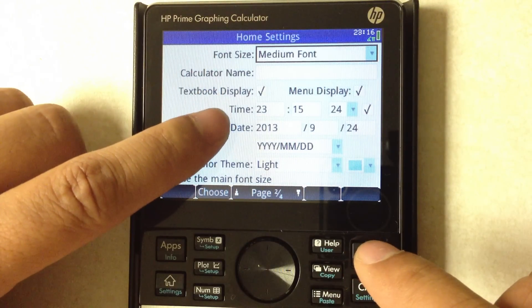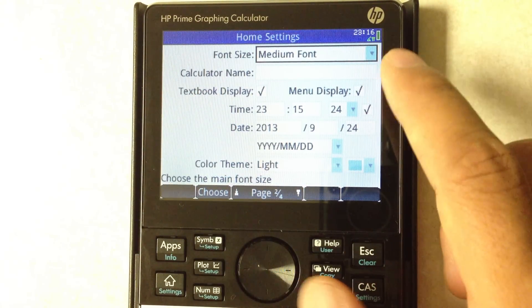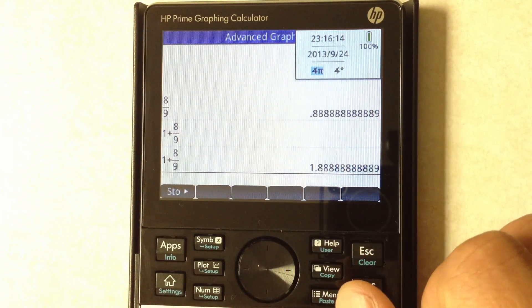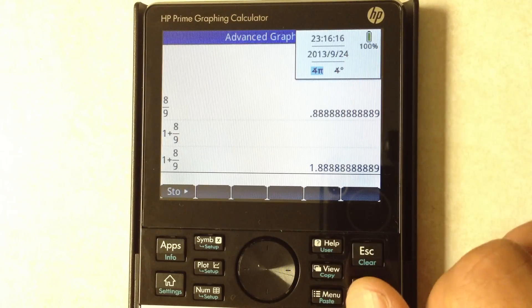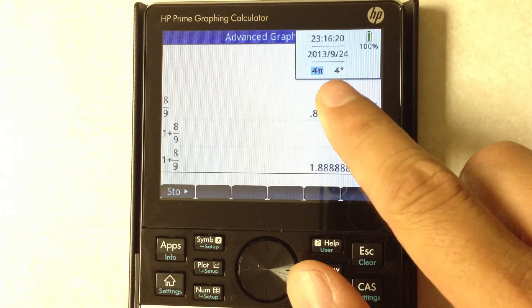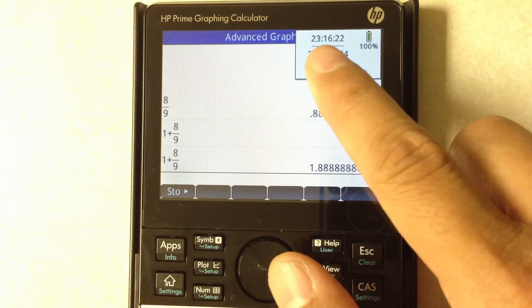It comes with the ability to keep track of time and the date and you would actually see that always in the top right of the screen. If you touch that corner it brings up a slightly bigger view where you can see the angle mode is currently in radians as opposed to degrees, the battery meter, the clock and the date.